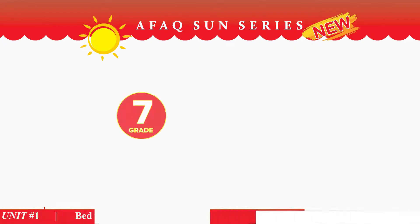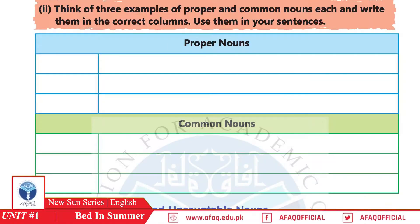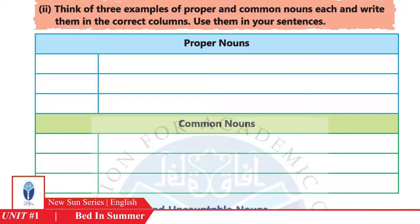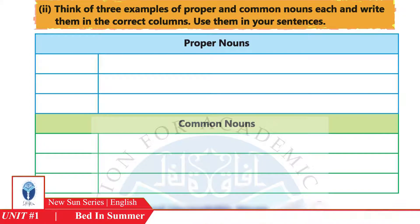Bismillahirrahmanirrahim. Grade 7, subject English, Chapter 1, Part 4, page number six. Activity two: think of three examples of proper and common nouns and write them in the correct columns, then use them in your sentences.